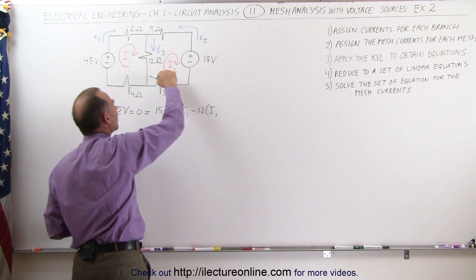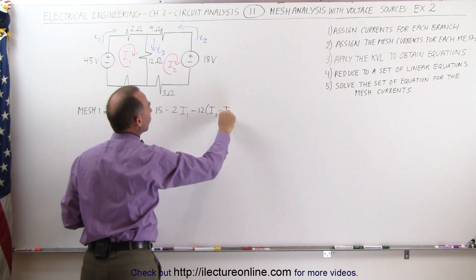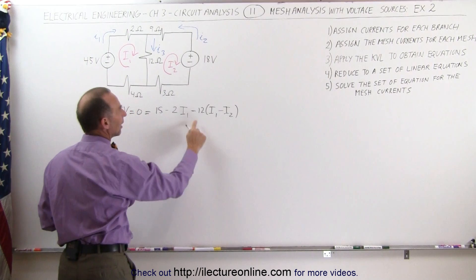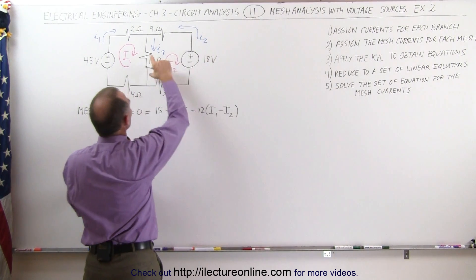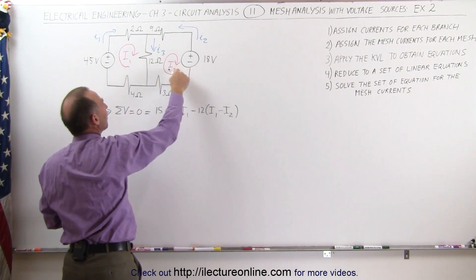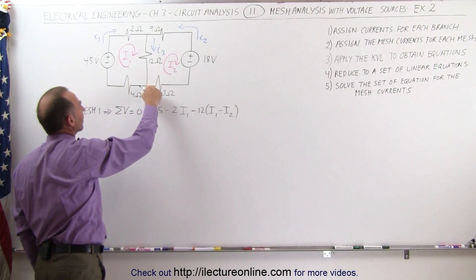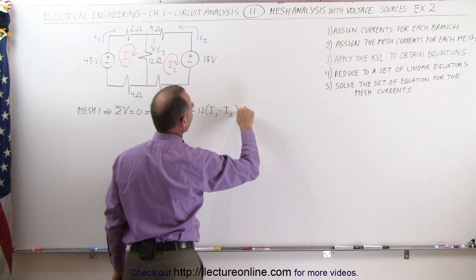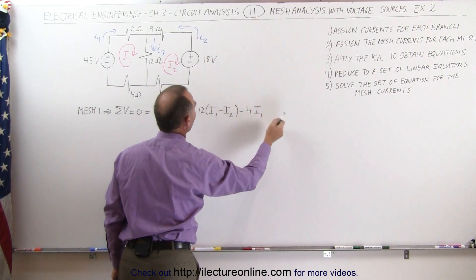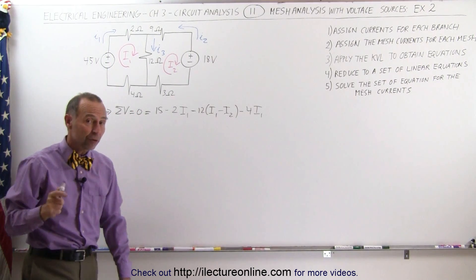Since I2 is in the opposite direction, we need to subtract I2, because that will be a voltage rise. This negative times this negative makes that product a voltage rise across the 12 ohm resistor based on the mesh current I2. Then across the 4 ohm resistor in the same direction as mesh current I1 — that's a voltage drop: minus 4 times I1. All that adds up to zero volts. That's our first equation.